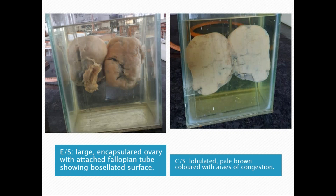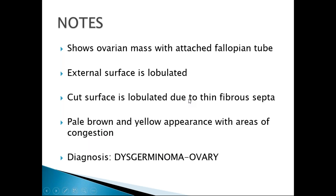This is the specimen found in our laboratory. On the external surface, the ovary is slightly enlarged with a smooth and lobulated surface. The attached fallopian tube is also visible. On the cut surface, we can see multinodularity — many nodules of various sizes divided by septa. The tumor is pale brown in color with areas of congestion. These are the lymph nodes of the specimen.